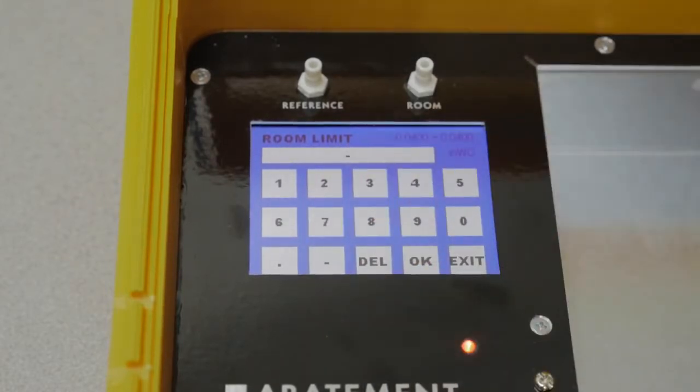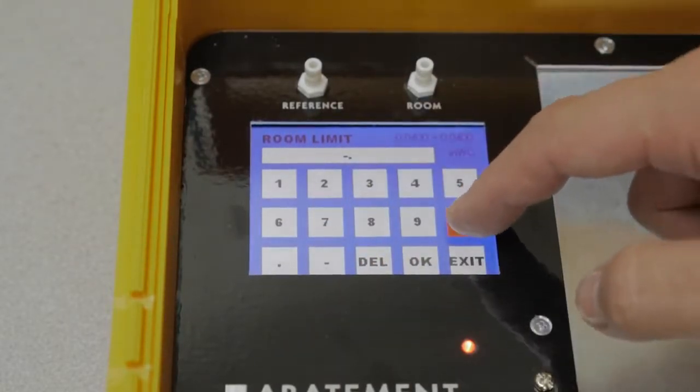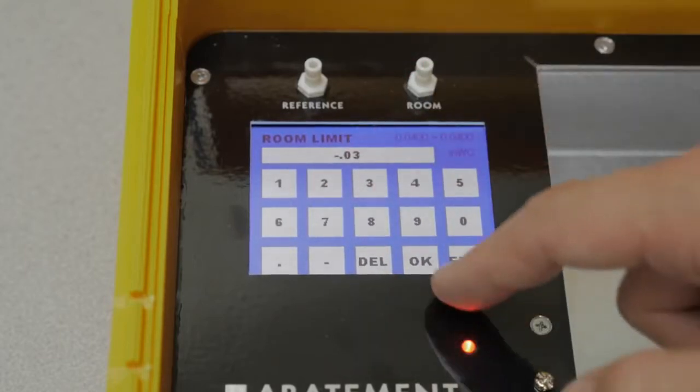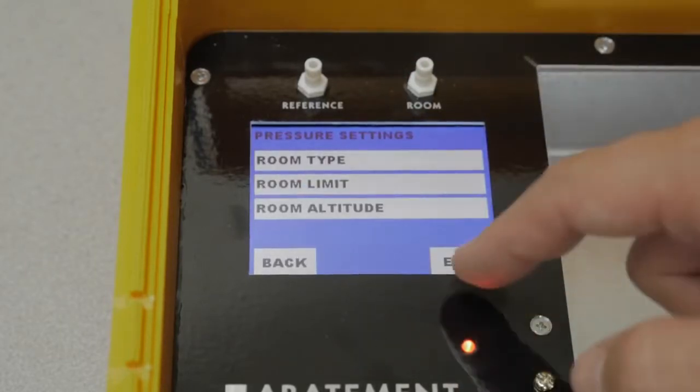If the room type is negative, anything above the set pressure limit will cause the system to alarm. If the room type is positive, anything below the set limit will cause the system to alarm.